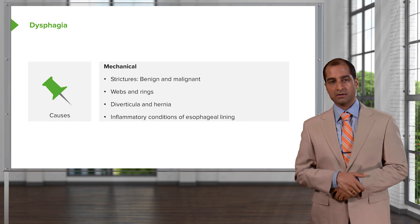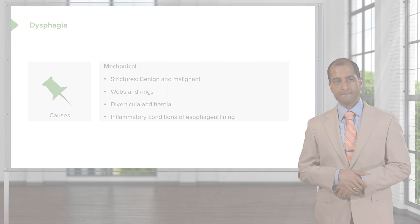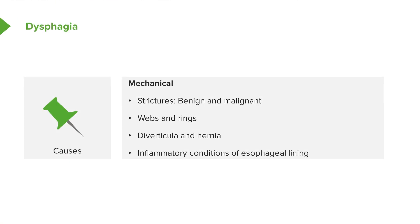Mechanical causes of dysphagia include strictures — either benign or malignant — as well as webs and rings, diverticula, hernias, and inflammatory conditions of the esophageal lining. For example, Zenker's diverticulum, hiatal hernia, and in immunocompromised patients, cytomegalovirus infection of the esophagus are all important mechanical differentials.